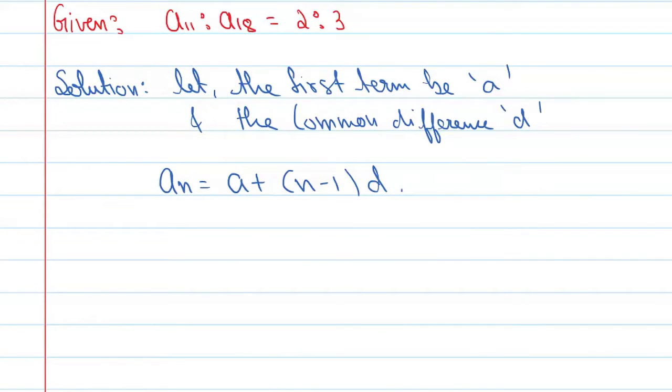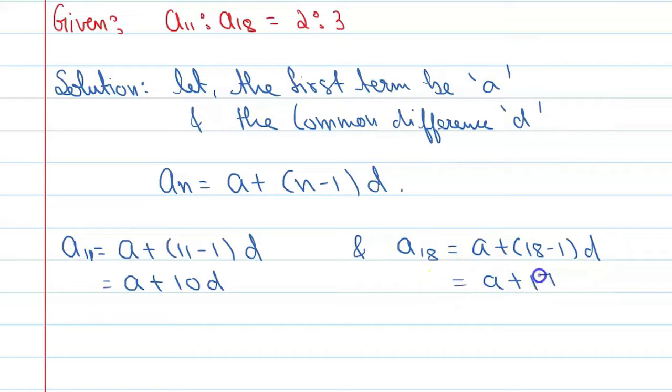we can say A11 is equal to A plus 11 minus 1 into d, so here we will get A plus 10d. And if we talk about A18, A18 is equal to A plus 18 minus 1 into d means A plus 17d.